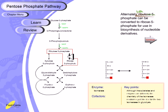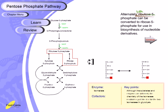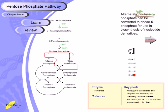Alternatively, ribulose-5-phosphate can be converted to ribose-5-phosphate for use in the biosynthesis of nucleotides, since ribose-5-phosphate is a very important ingredient for nucleotide synthesis. This is another type of isomerization of ribulose-5-phosphate, which can give rise to either xylulose-5-phosphate via epimerization or ribose-5-phosphate via isomerization. All these derivatives are five-carbon, so there is no carbon addition or deletion. The chemistry of this isomerase reaction is similar to isomerase reactions in glycolysis.